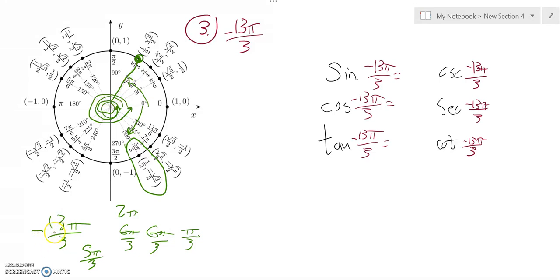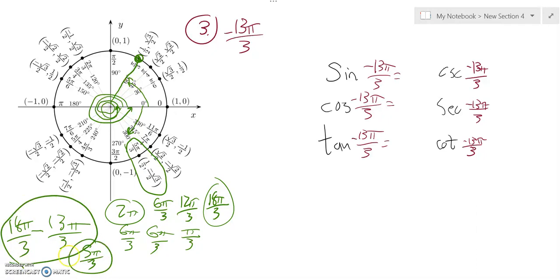If you want a computational way to think about that, just think of 2 pi as 6 pi over 3. 6 pi over 3 is a full rotation. 12 pi over 3 is two full rotations. And if you go 6 more, 18 pi over 3 is three full rotations. And you could just go 18 pi over 3 minus 13 pi over 3, and notice that's 5 pi over 3.